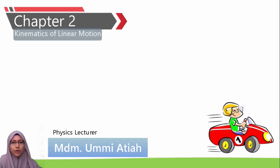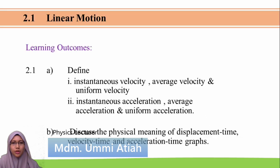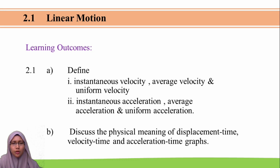Now we continue with Chapter 2, Kinematics of Linear Motion. In subtopic 2.1, Linear Motion, we have two learning outcomes: the first is to define types of velocity and acceleration, and the second is to discuss the physical meaning of the displacement-time graph, velocity-time graph, and acceleration-time graph.